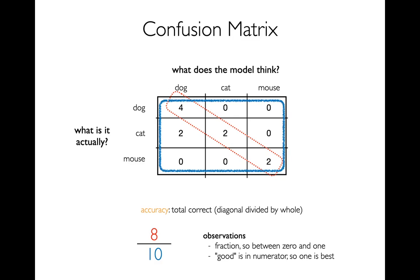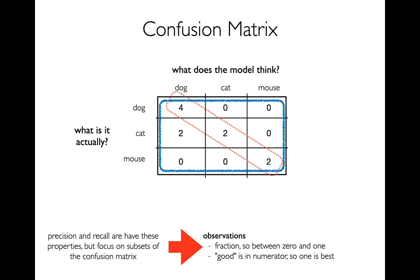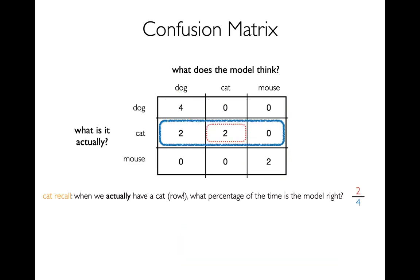This number is a fraction — a subset over a larger amount — always between zero and one, with the good number in the numerator, so one is the best possible. Precision and recall have those same properties, but they use different subsets of the matrix. It turns out we can actually have these metrics for each class, so I'll have six different metrics: dog recall, cat recall, mouse recall, and similarly dog precision, cat precision, and mouse precision.